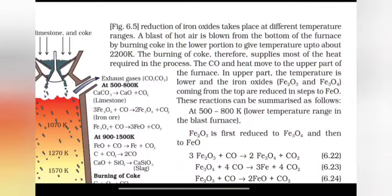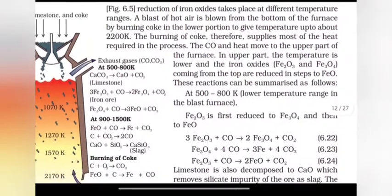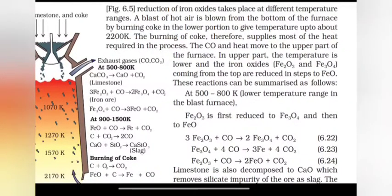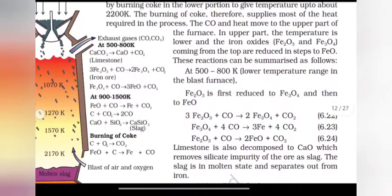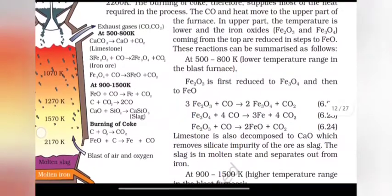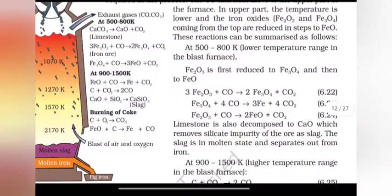A blast of hot air is blown from the bottom of the furnace by burning coke in the lower portion to give temperature up to about 2200 Kelvin. The burning of coke therefore supplies most of the heat required in the process. The CO and heat move to the upper part of the furnace. In upper part the temperature is lower and the iron oxides Fe2O3 and Fe3O4 coming from the top are reduced in steps to FeO. These reactions can be summarized as follows.